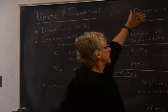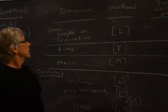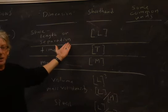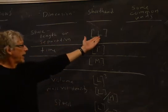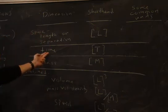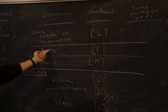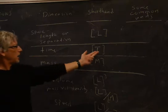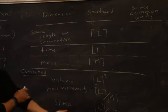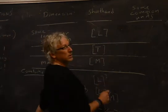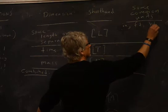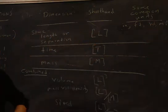So quickly, the idea of dimensions and units. By dimension we just mean like space, or length, or the separation between things is given a symbol of L, often in these brackets. Time, the dimension of time, is capital T. The dimension of mass is capital M. Of course, they have different units. Common units for length would be the American common units: inch, foot, yard, mile.